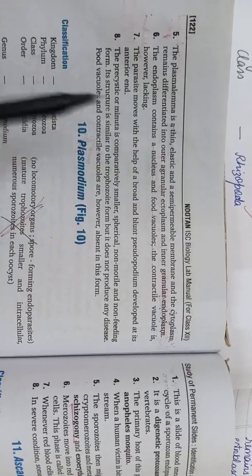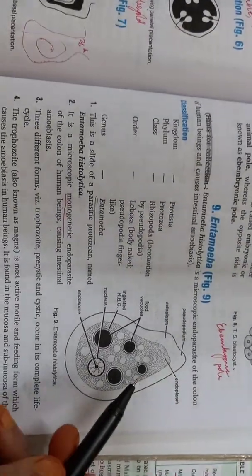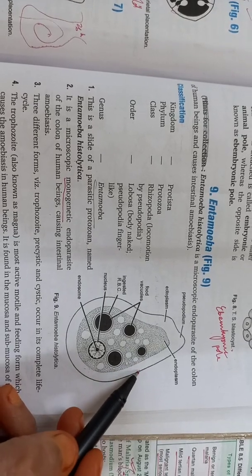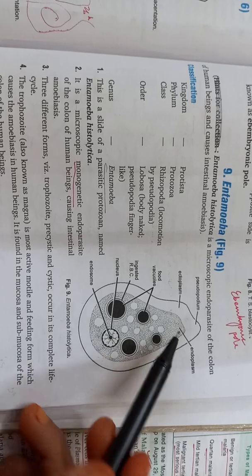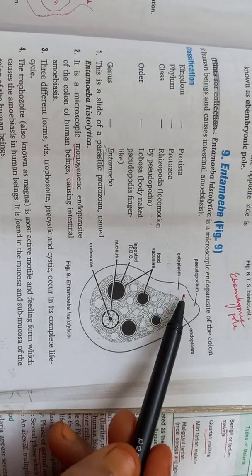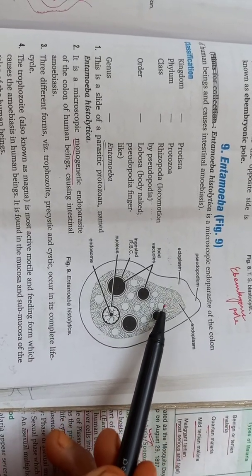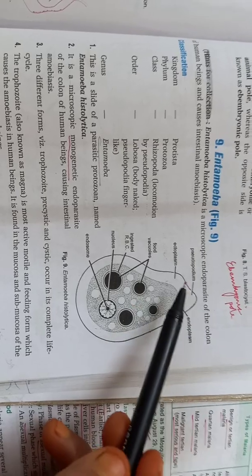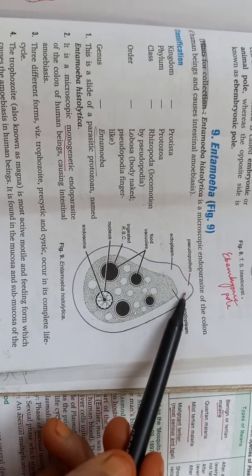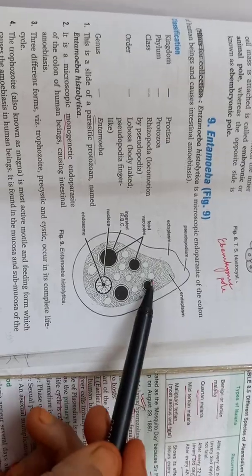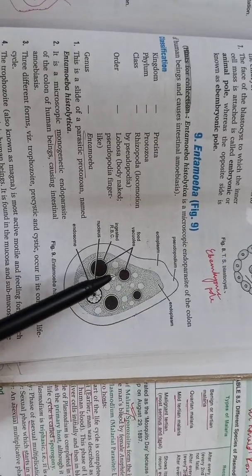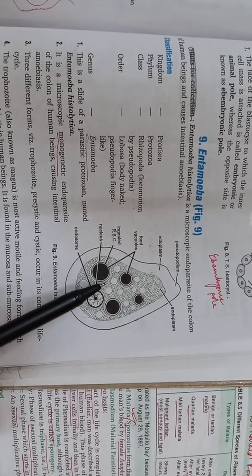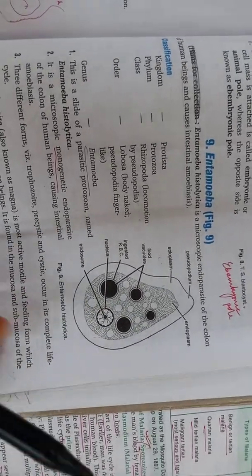The plasma lemma is thin, elastic and semi-permeable. Which plasma lemma? We are talking of this outer boundary is thin, elastic and semi-permeable. The cytoplasm as you can see is divided into two regions. Outer is ectoplasm, inner is endoplasm. What is the difference? Ectoplasm is agranular or without the granules, whereas endoplasm is granular and you can see there are large number of granules. Then what you can also see is various food vacuoles. Then there is a nucleus here.